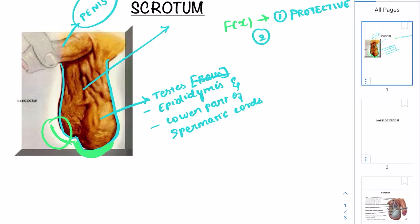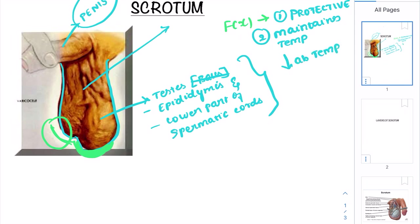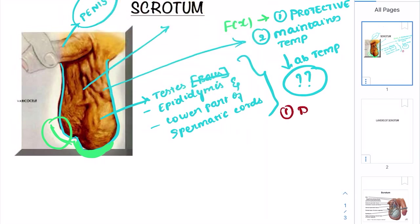The second important function is that it maintains the temperature of the testes, epididymis, and lower part of the spermatic cords. That temperature should be lower than the abdominal temperature in order to produce sperms. The scrotum plays a major role in maintaining this temperature, and it does so because of two different muscles: the dartos muscle and the cremaster muscle.